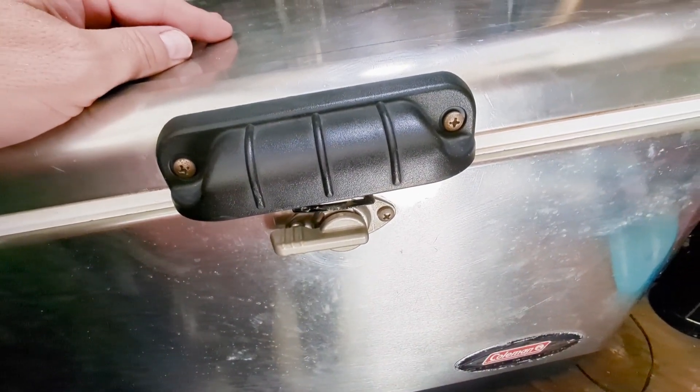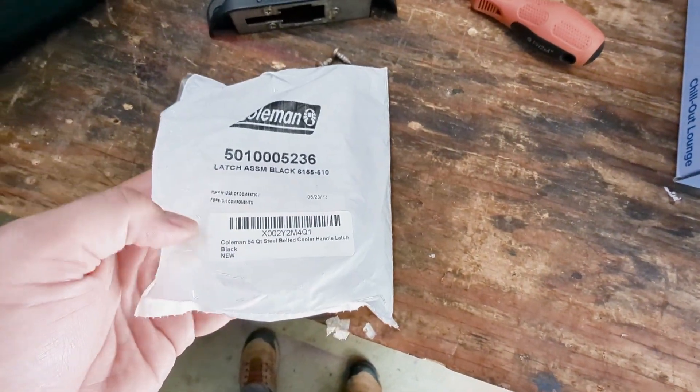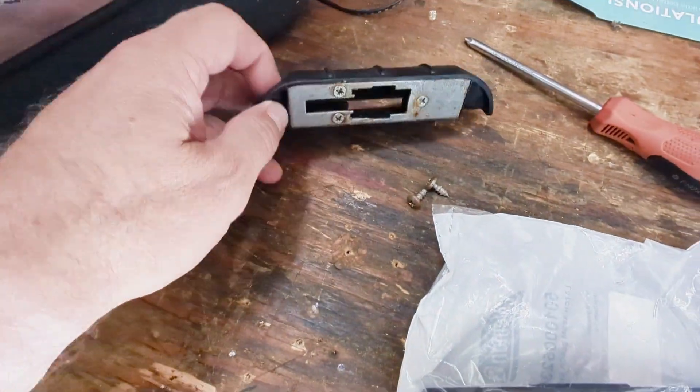So let's get that off and put the new one on. Okay, here's the part. That's for the Coleman steel belted and this is the old one I just took off.